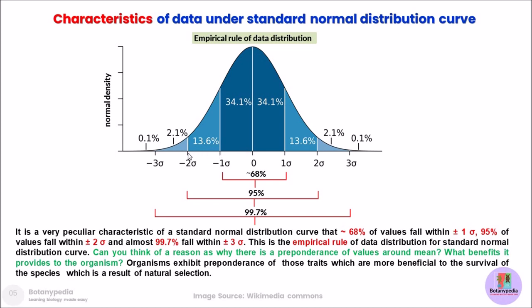If you keep extending this curve towards the left and right-hand sides and reach two standard deviations, you see that 95% of your observations are taken into account. Likewise, if you keep moving towards three standard deviations on both ends, 99.7% of your observed values are covered. This particular type of data distribution is known as empirical rule data distribution for the standard normal distribution curve.